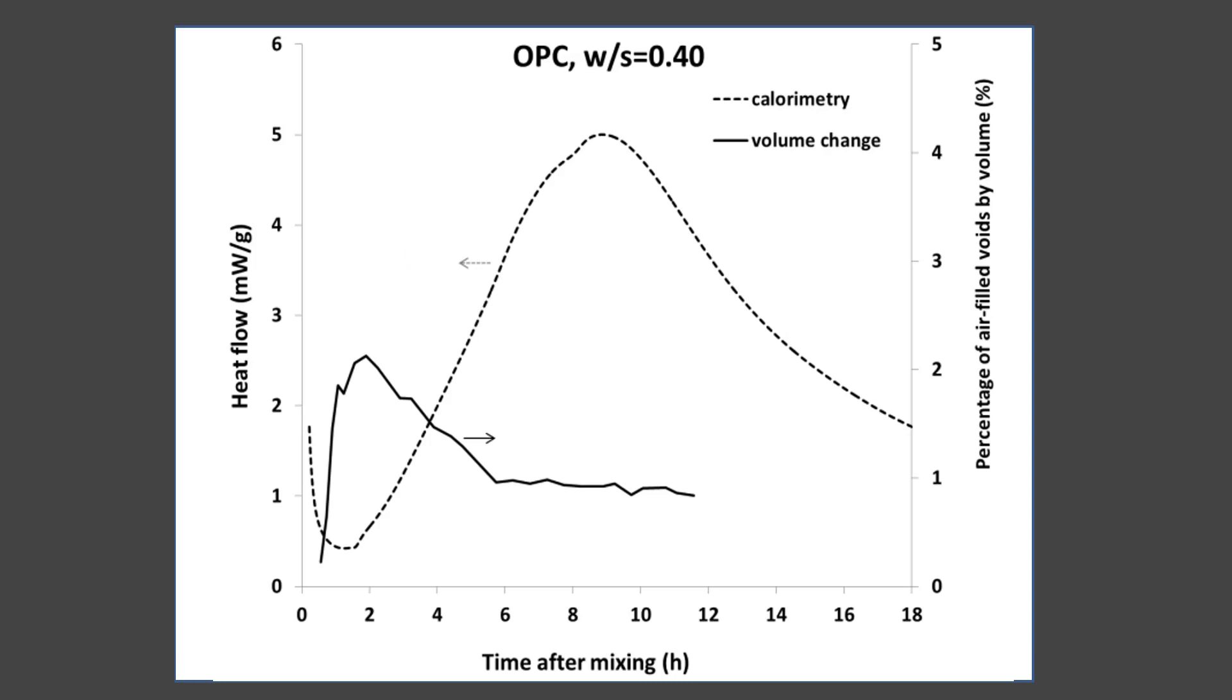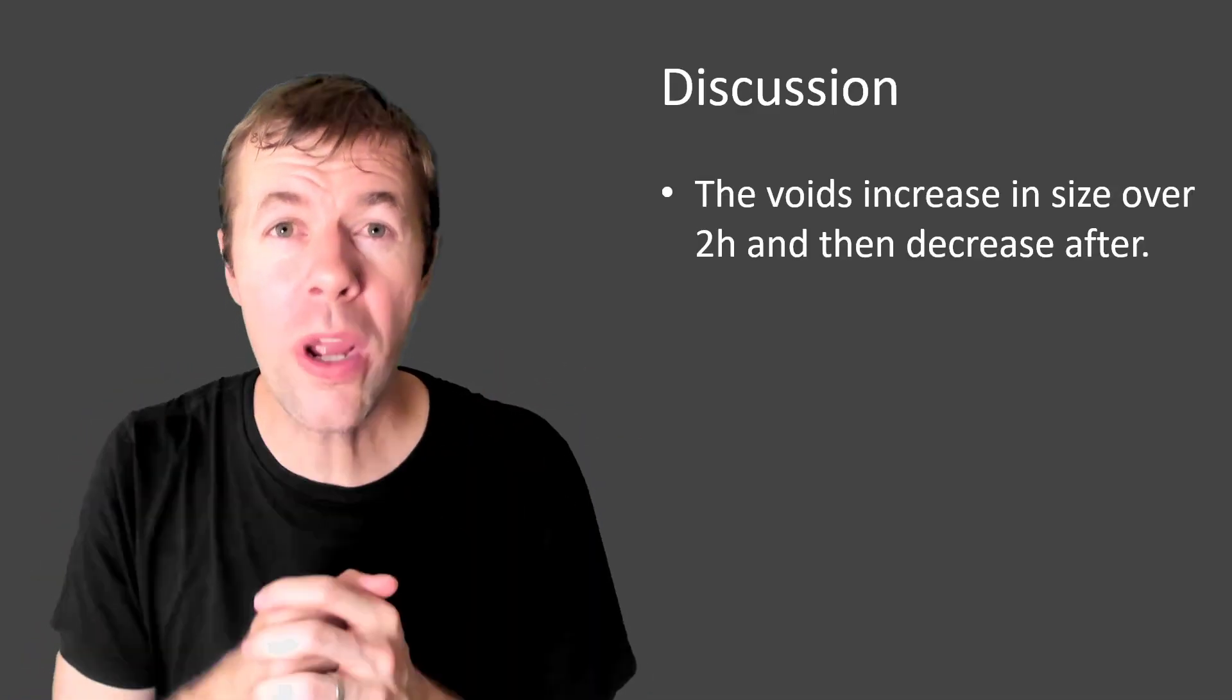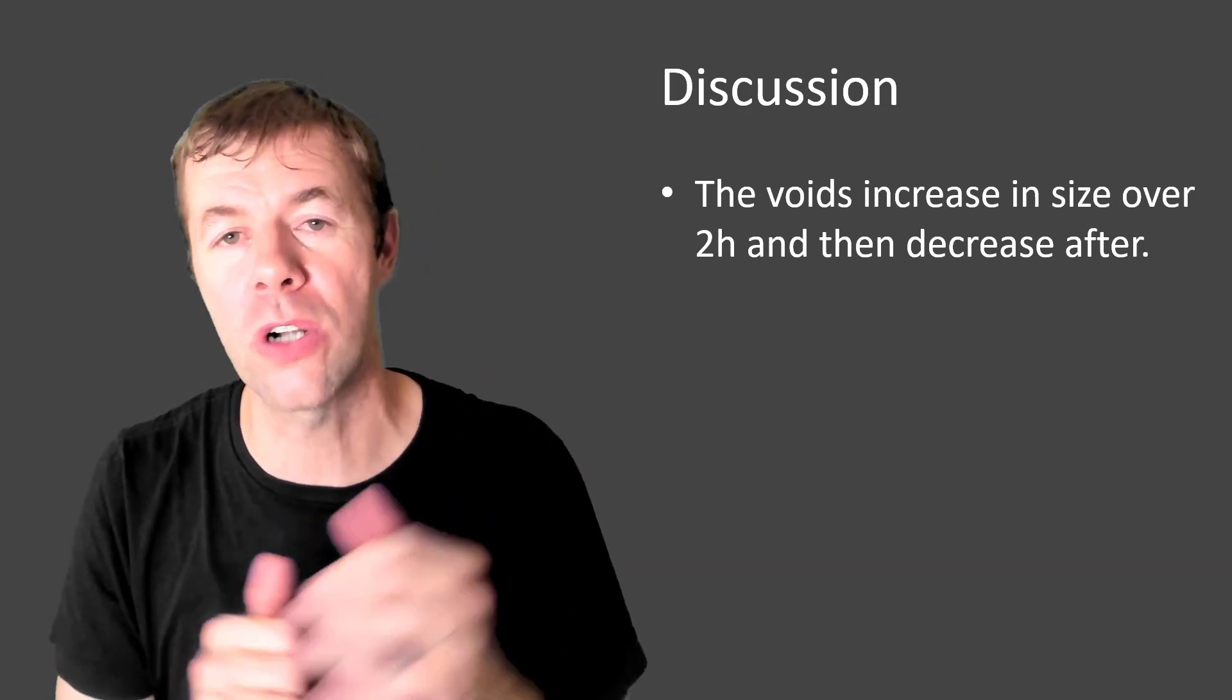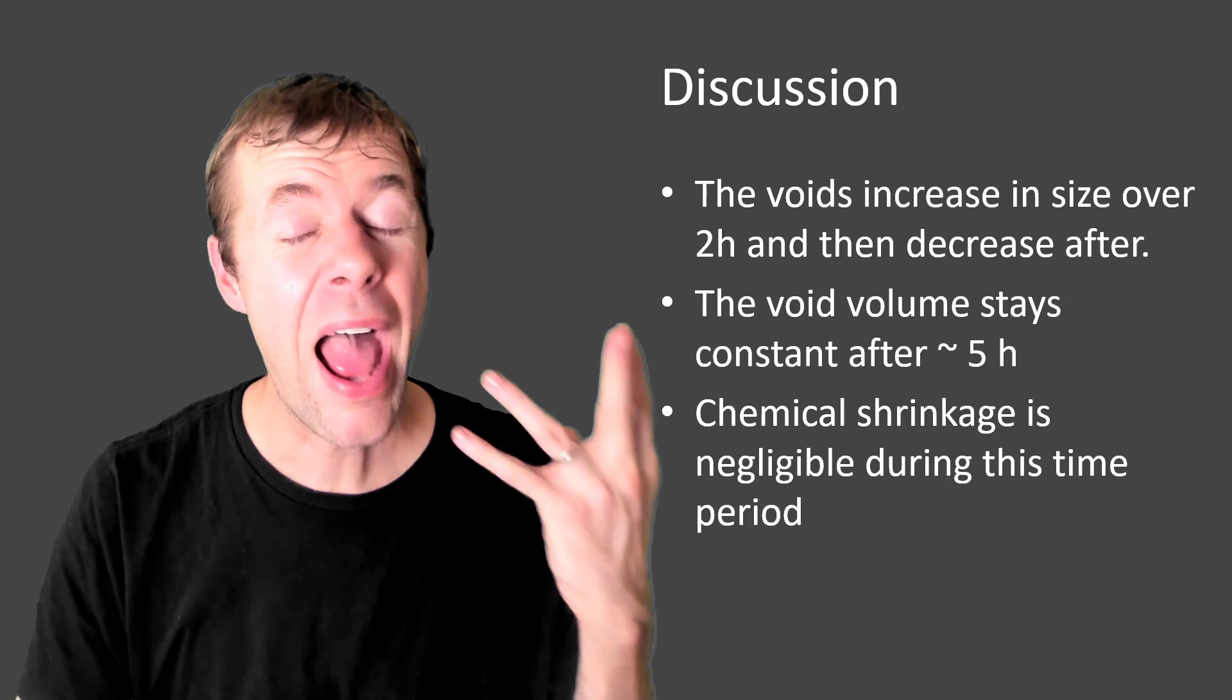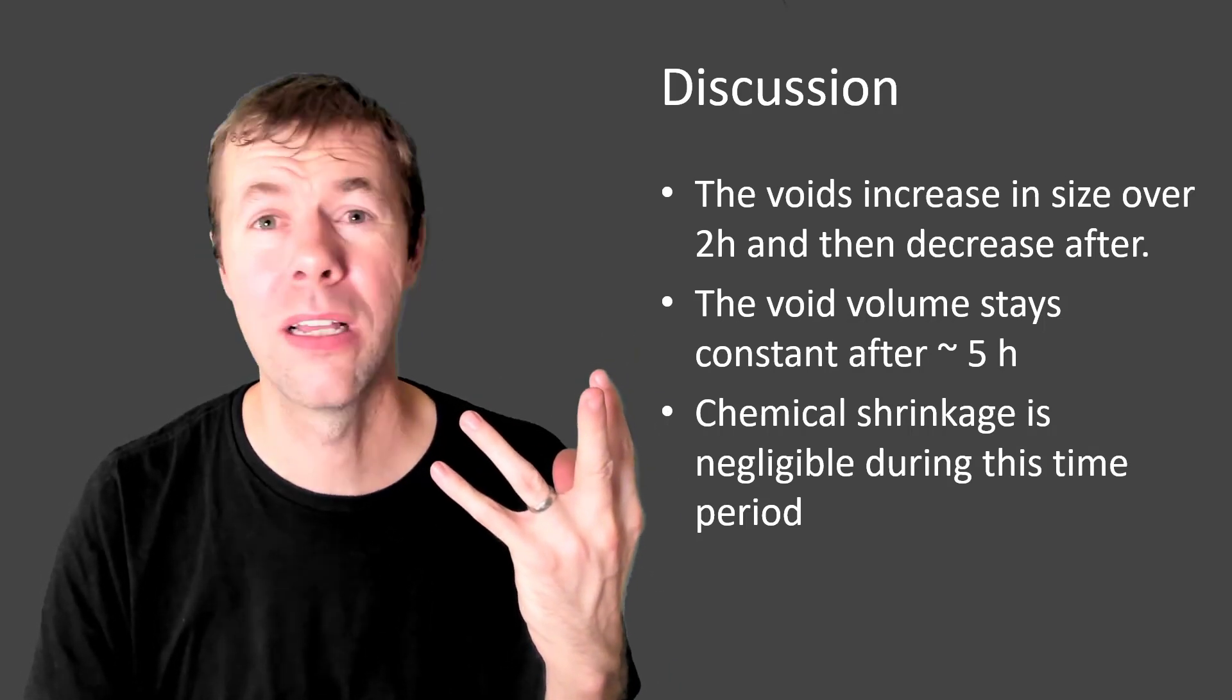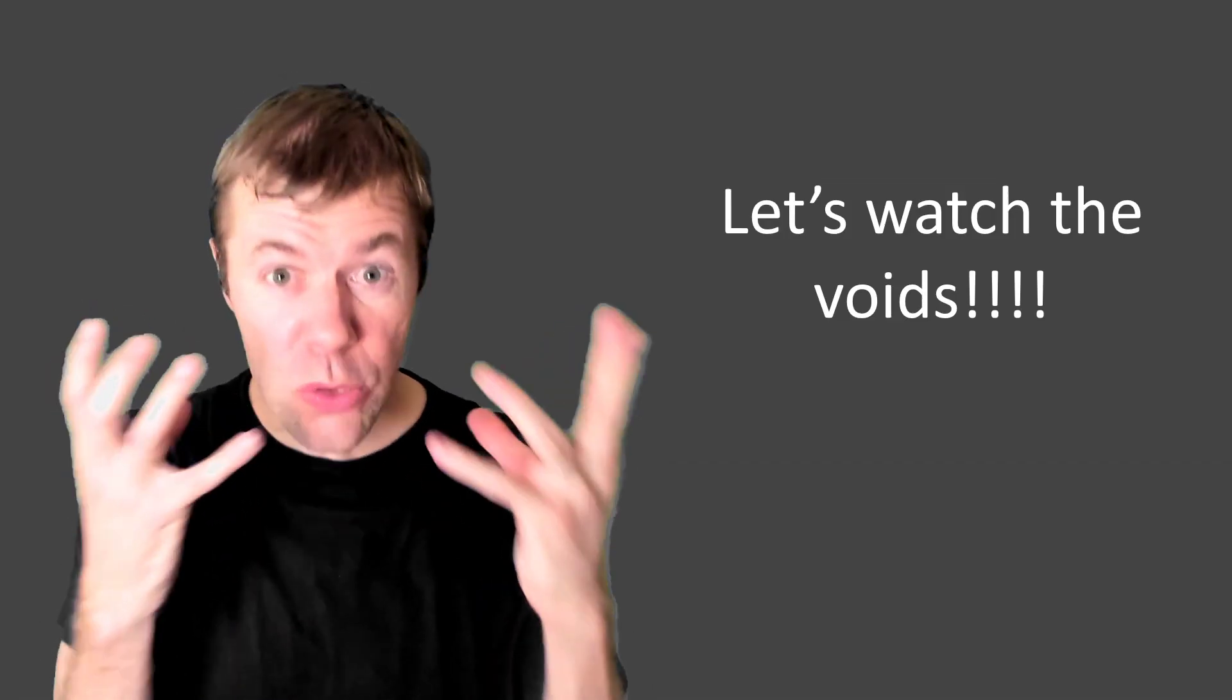If we plot that same volume change that I'm showing here in black versus the calorimetry curve, that's the amount of heat given off as the cement reacts and hydrates, you can see they kind of line up. You can see that right around the two-hour magical time period, as the void volumes go up, right as the voids start to go down, look at the heat, the heat is going up. And right about five or six hours, when things get to the tippy top here, things get stiff and hard. And that's when the voids stop changing size, probably because things get hard. So in summary here, the voids increase in size over the first two hours, then start to decrease, then they stay about constant after about five hours. The chemical shrinkage is totally negligible during this time. And this is not what I expected.